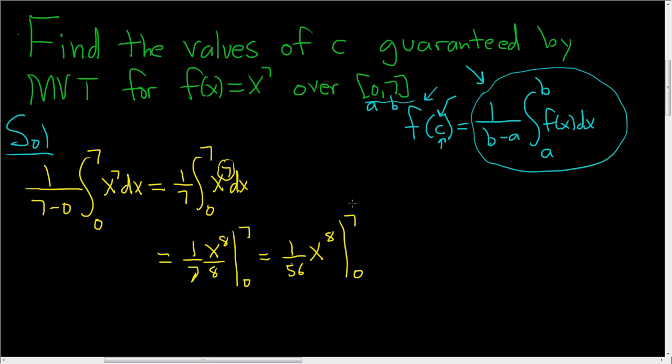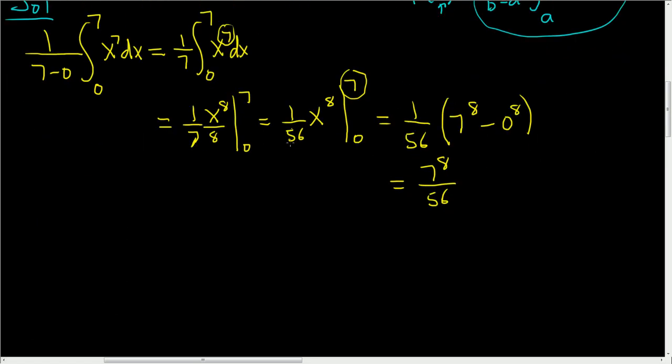And first we plug in the 7. So this is 1 over 56, parentheses, and then plugging in the 7 we get 7 to the 8th minus 0 to the 8th. But 0 to the 8th is 0. So we end up with 7 to the 8th over 56. So how do you simplify this? Well, you could use a calculator, but there's nothing wrong with that.